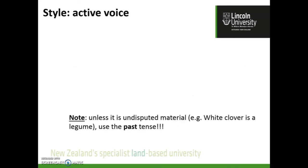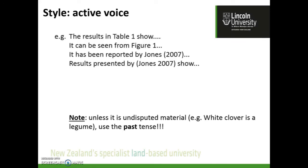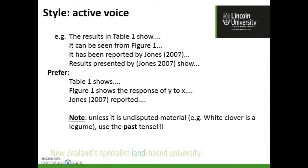Trying to write in the active voice is important. Rather than writing 'the results in Table 1 show,' try 'Table 1 shows' or 'Figure 1 shows.' Figure 1 shows the response of Y to X — Y being the measured variable, followed by the classification variable. Use 'Jones reported.' The other key thing is to write in the past tense — use 'was' and 'were,' not 'is' and 'are.' The results of one experiment are not conclusive and do not create a fact. Facts can be written in the present tense — 'white clover is a legume' — but use the past tense whenever referring to scientific results.